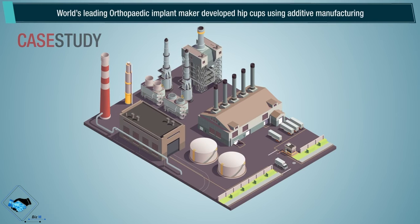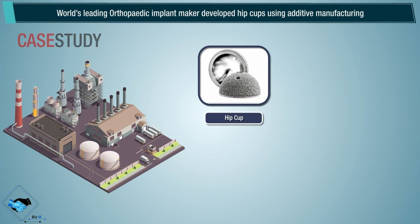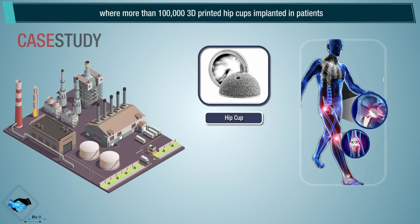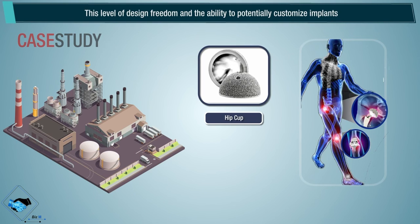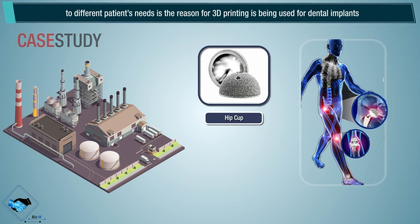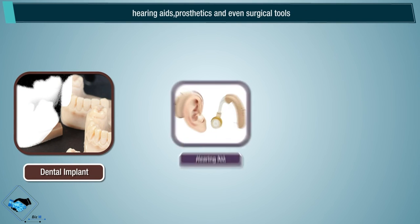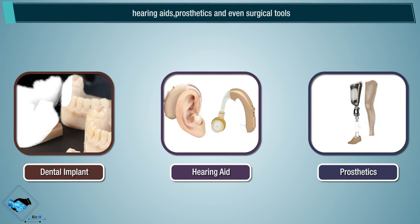A world-leading orthopedic implant maker developed hip cups using additive manufacturing, with more than 100,000 3D printed hip cup implants placed in patients. This level of design freedom and the ability to customize implants is the reason 3D printing is being used for dental implants, hearing aids, prosthetics, and even surgical tools.